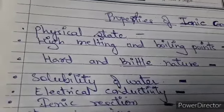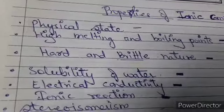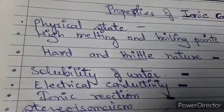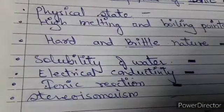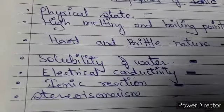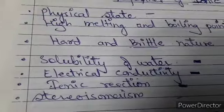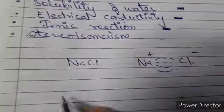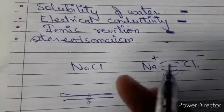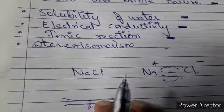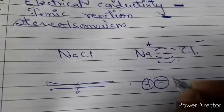While ionic compounds are hard due to strong electrostatic forces, they are brittle because the ions form layers. When an external force is applied, like charges come adjacent to each other — positive next to positive and negative next to negative — causing the layers to repel each other. This repulsion causes cleavage of the crystal, making ionic solids brittle.